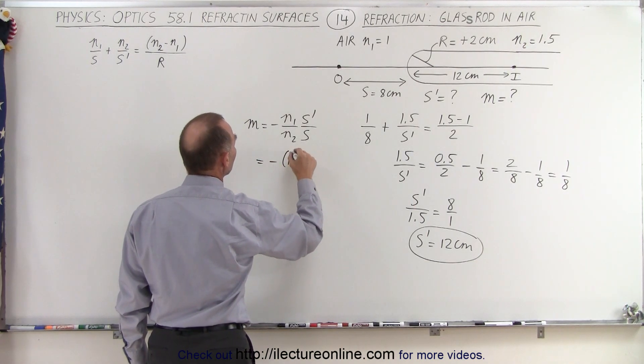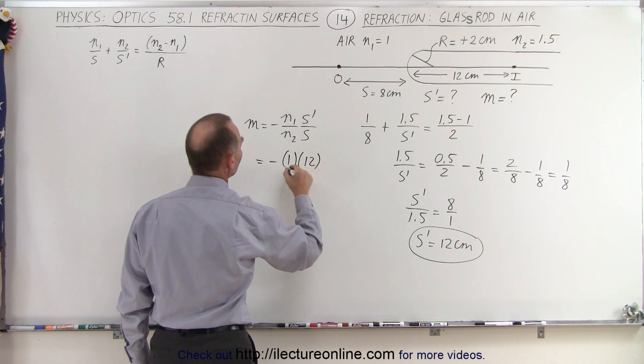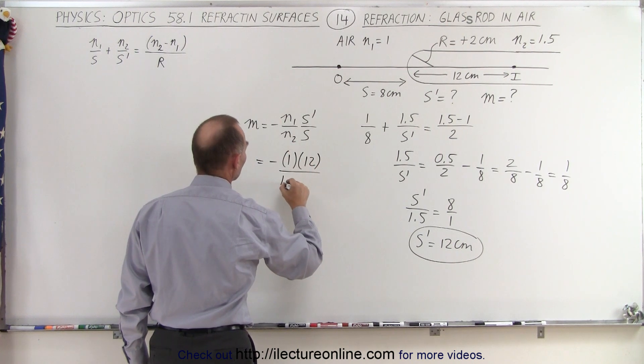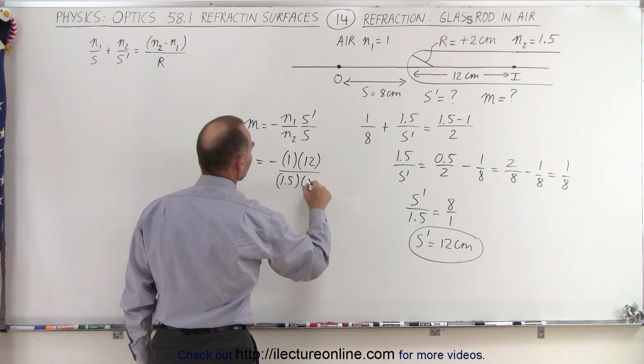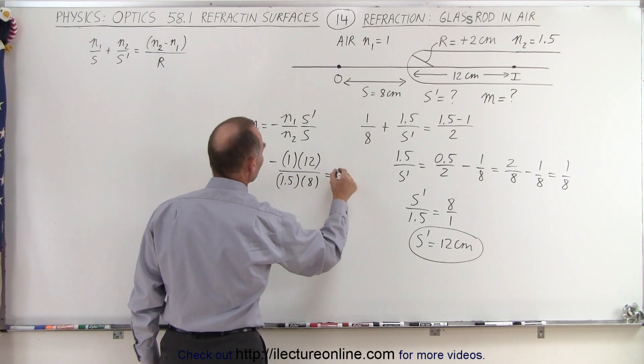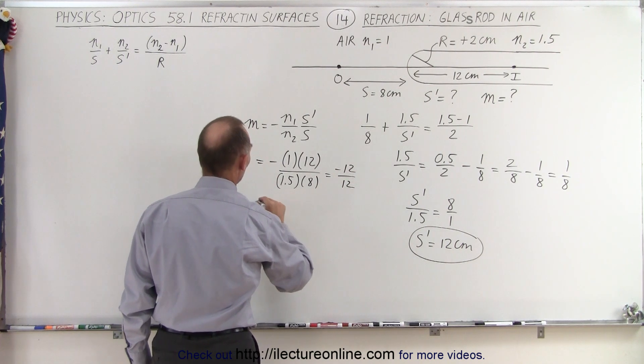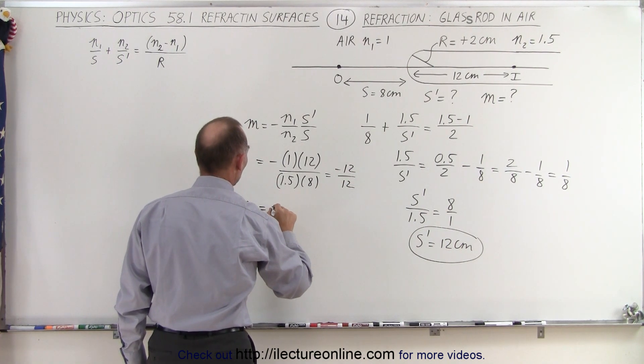So this is equal to minus 1 times s prime, which is 12, divided by n2, which is 1.5, divided by 8, and notice it's going to be equal to minus 12 over 12, or the magnification is equal to minus 1.